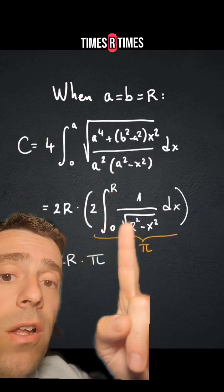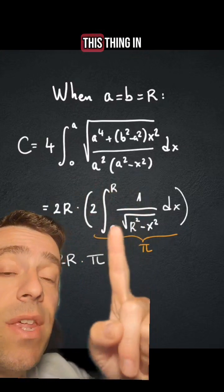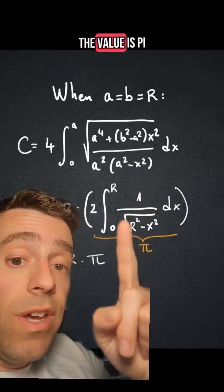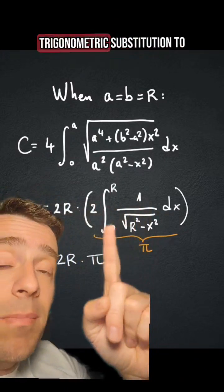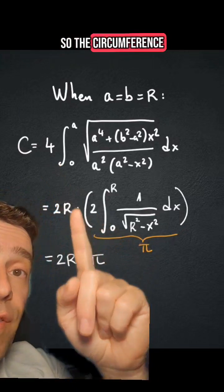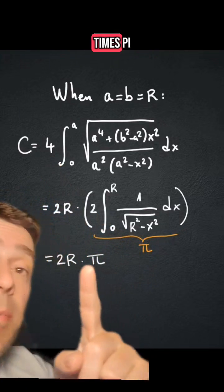which is 2 times r times this thing in the parenthesis, this integral, which the value is π. You can use trigonometric substitution to prove that the value of that integral is exactly π. So the circumference is the diameter times π.